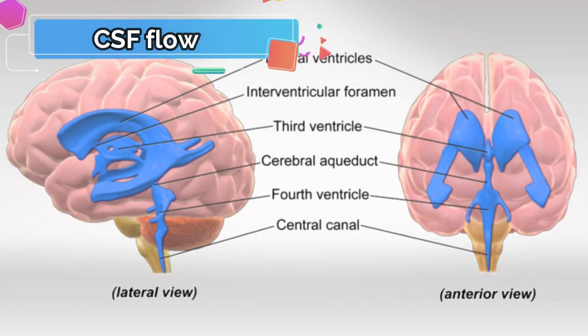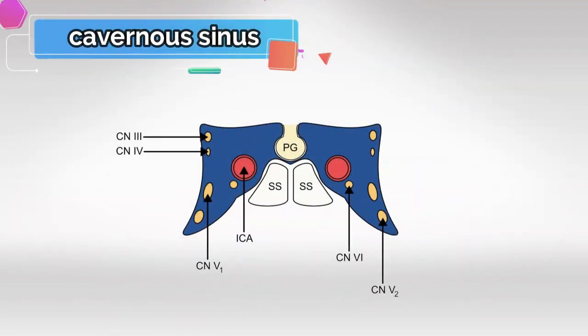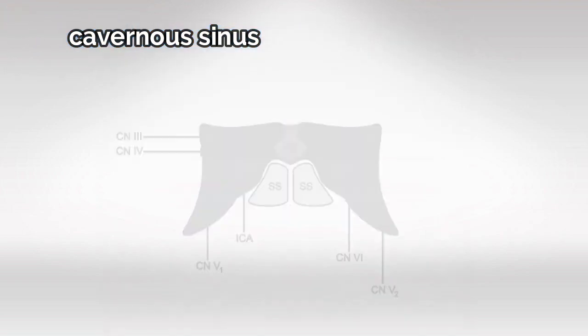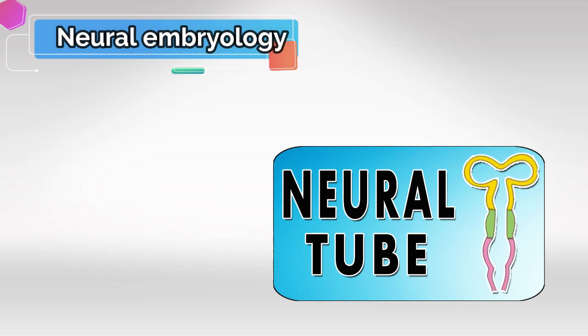You'll also need to know the CSF flow all the way from the lateral ventricles to the subarachnoid granulations. Cavernous Sinus Syndrome is also a must-know for the exam, so you'll need to know what arteries and nerves pass through the cavernous sinus. That pretty much covers everything important for the circulation of the brain.